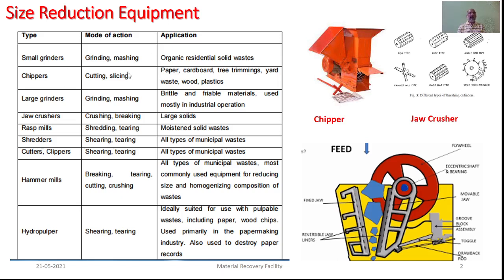The modes of action include grinding, mashing, cutting, slicing, shredding, tearing, breaking, and such operations for any of these equipment. All these particular kinds of equipment will be available, and where they are to be used will solely depend on the person designing the waste treatment management operation. Most of the equipment can be used for processing a variety of municipal solid waste.